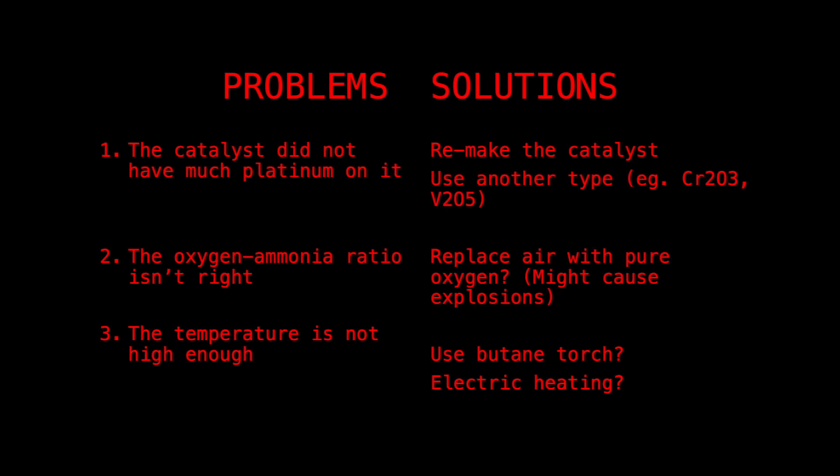The third point is the temperature. I think it was quite apparent that the alcohol burner did not do a very good job on controlling the temperature to be high, because according to my research, the industrial setting for this Ostwald oxidation requires something like 800-900 degrees Celsius. But I seriously don't think the alcohol burner worked up to that temperature. So maybe I'll try using a butane torch, or maybe even do an electric heating, just like in the industrial setups.